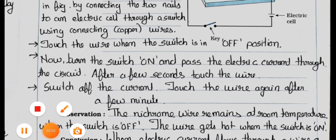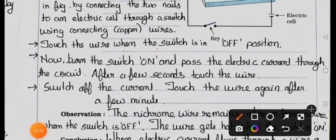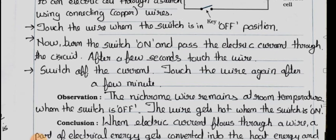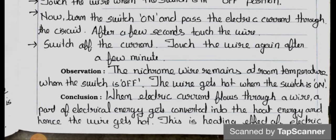Touch the wire when the switch is in off position. Now turn the switch on and pass the electric current through the circuit. After a few seconds, touch the wire. Switch off the current, touch the wire again after a few minutes. Observation: The nichrome wire remains at room temperature when the switch is off. The wire gets hot when the switch is on.